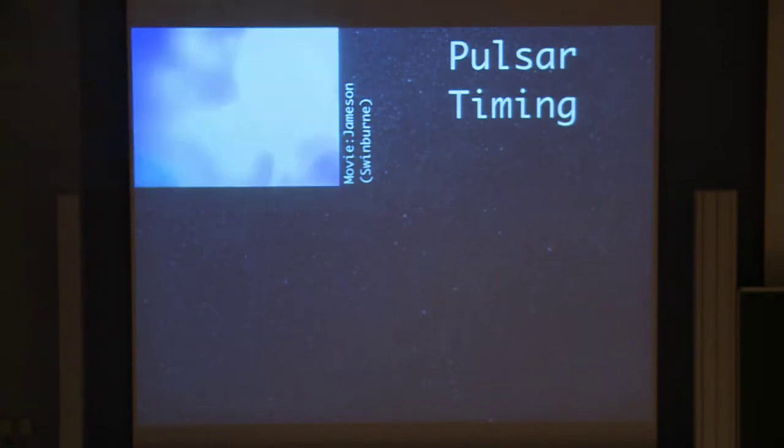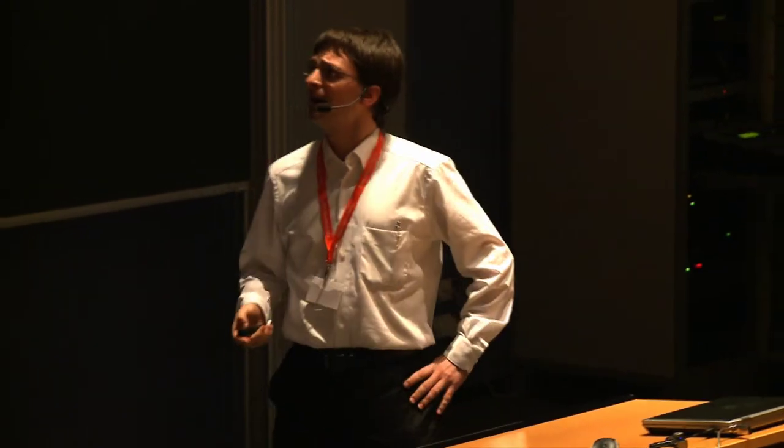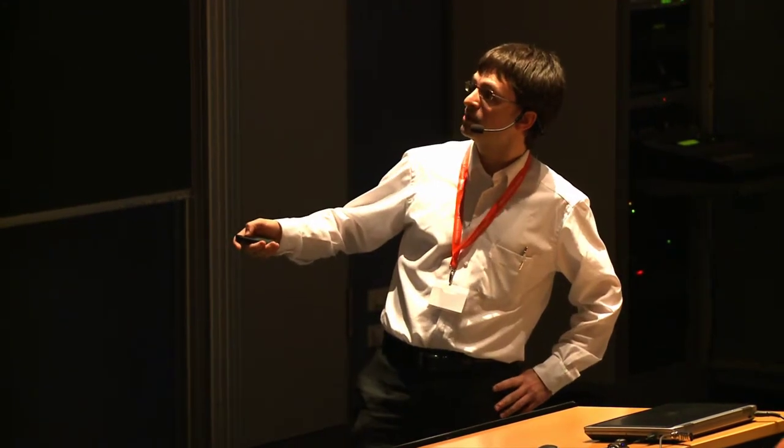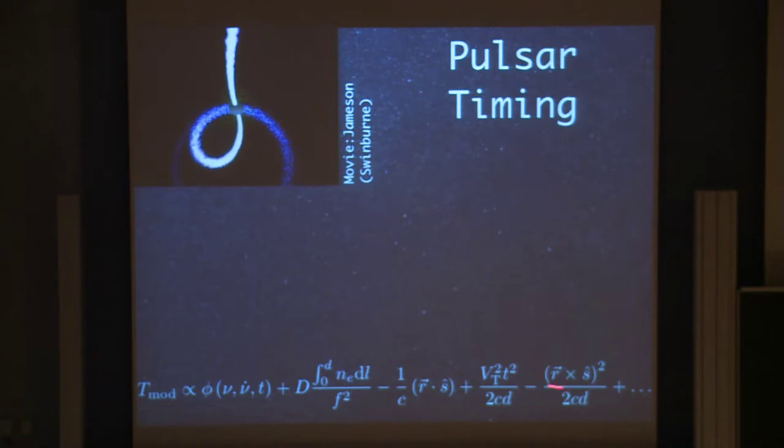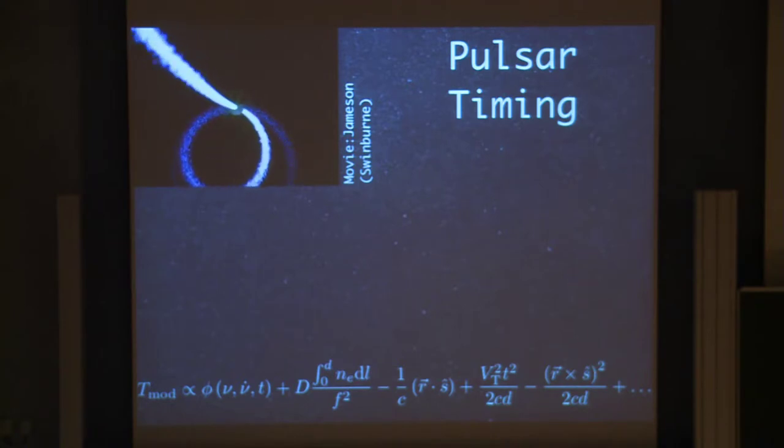If that rotation is stable enough and the radiation beam goes nicely, you can mathematically predict when these pulses should arrive. This is just to give you a basic idea of what goes in there. You've got the spin frequency of the pulsar, it spins down as it loses energy and rotates slower in time. There's dispersive effects to do with the electron density in the interstellar medium. R and S are vectors that point from the solar system barycenter to the Earth, as the Earth goes around the Sun, that changes the length of the travel path of the photons that need to be taken into account. The other vector points in the direction of the pulsar, the velocity of the pulsar as it moves in the sky, and a whole lot of other terms, especially when the pulsar is in a binary system.